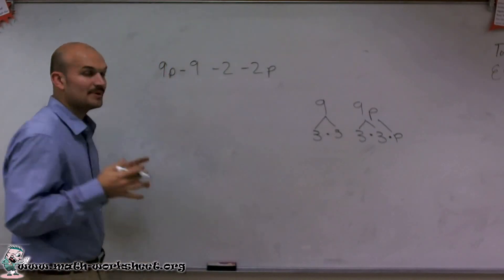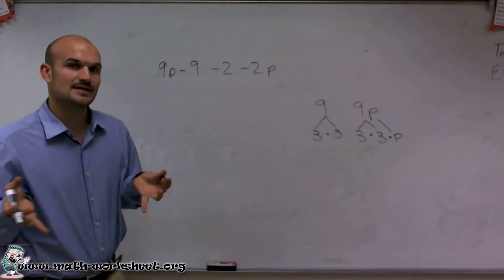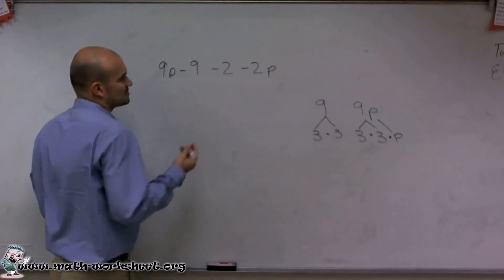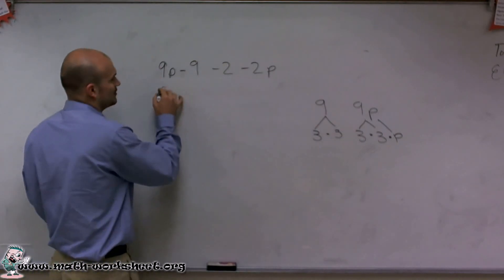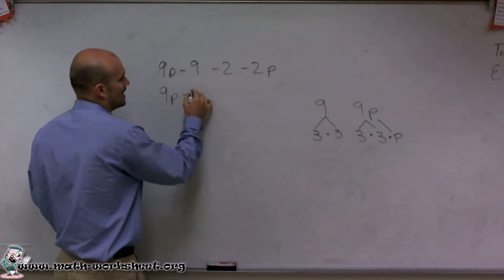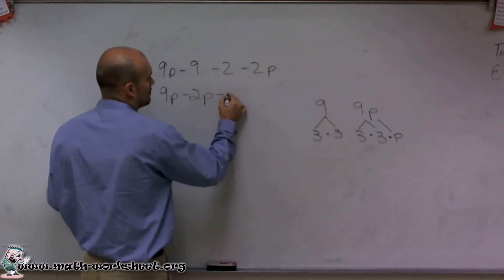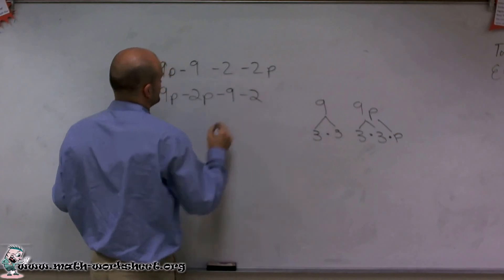So what I'm going to do is rearrange this problem so I have my like terms right next to each other. Because remember, we can work with the associative property to do that. So I can write 9p minus 2p minus 9 minus 2.